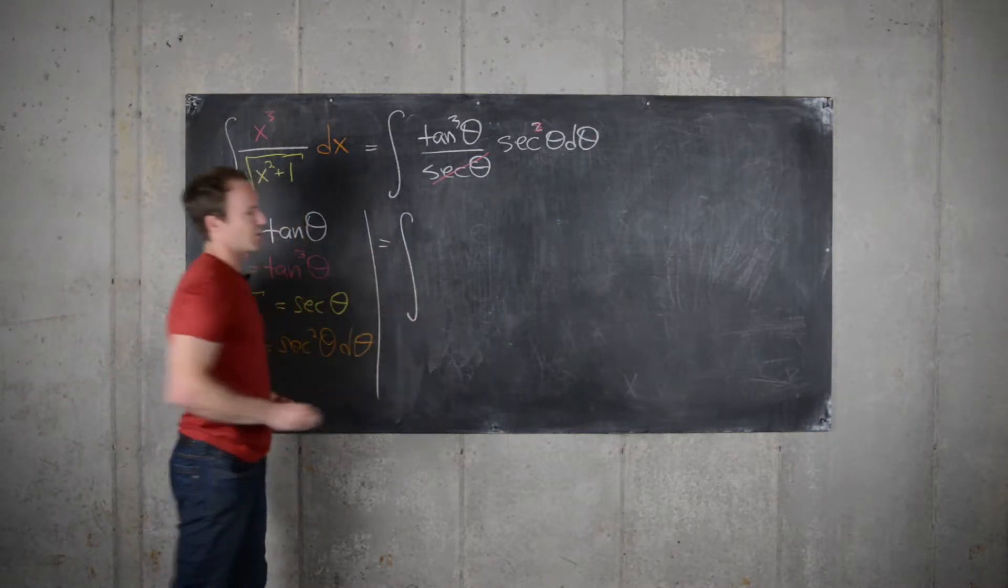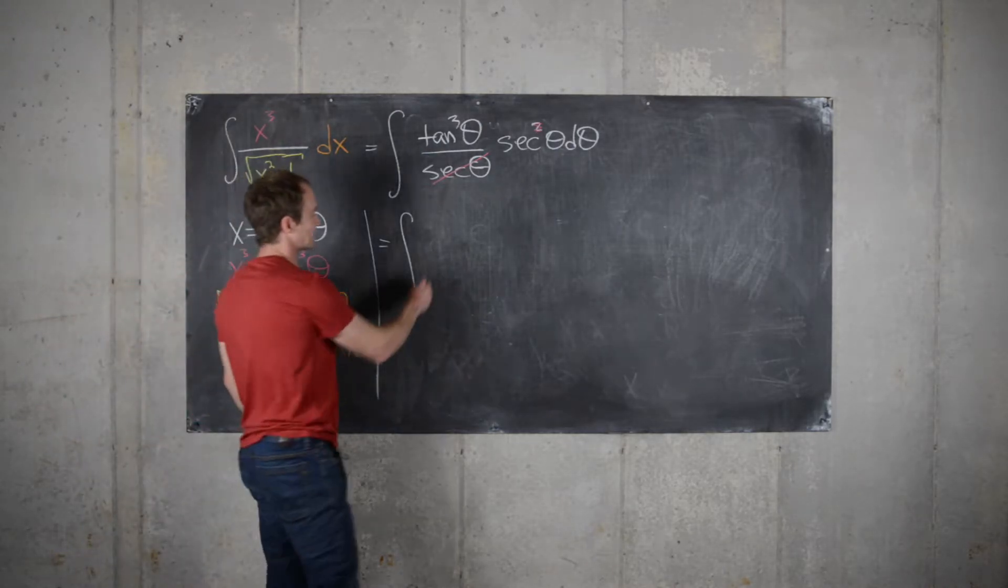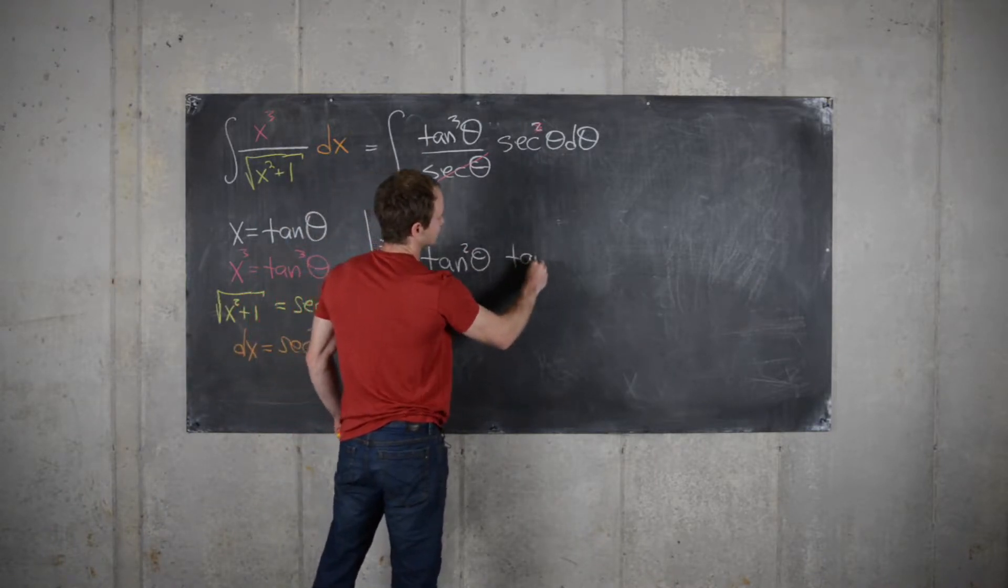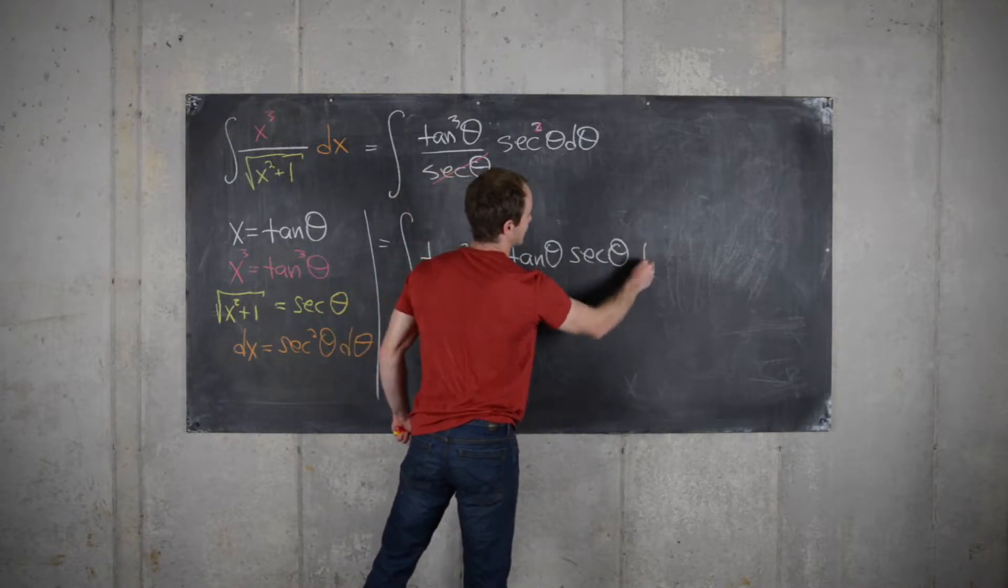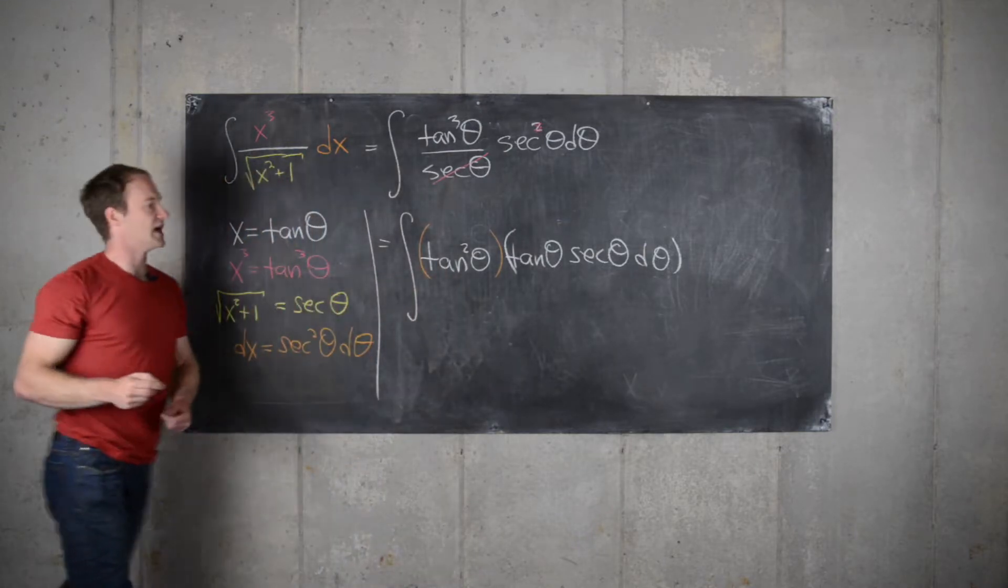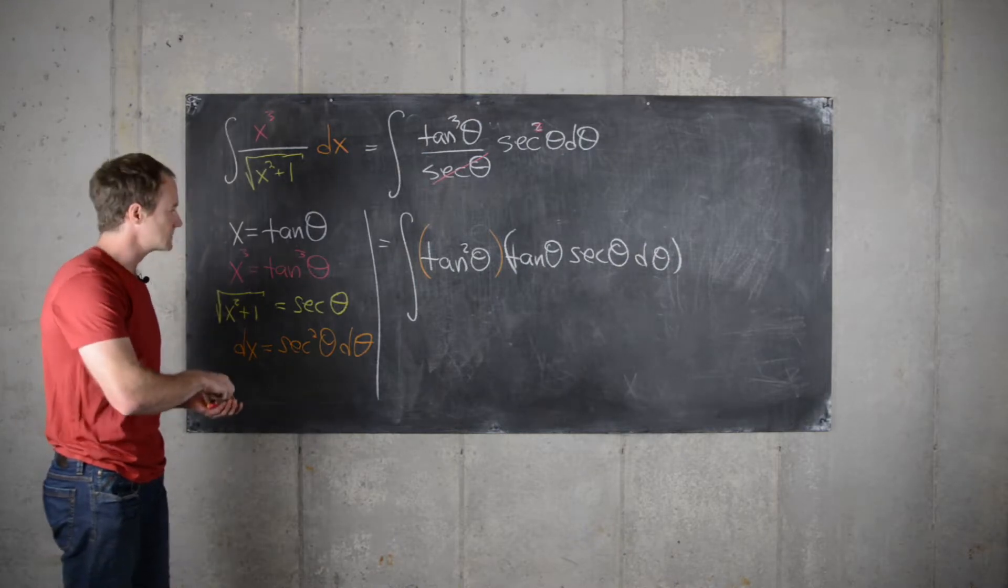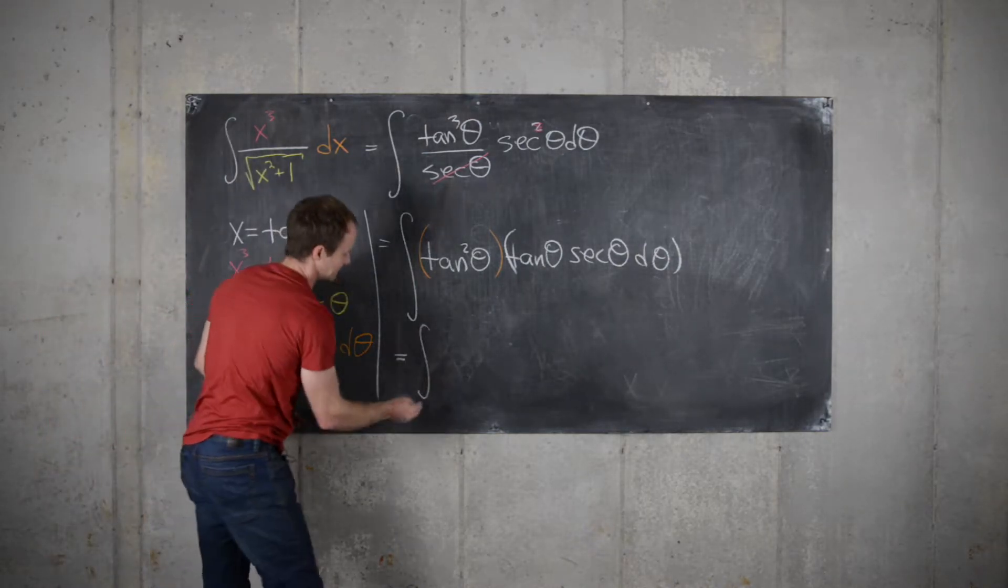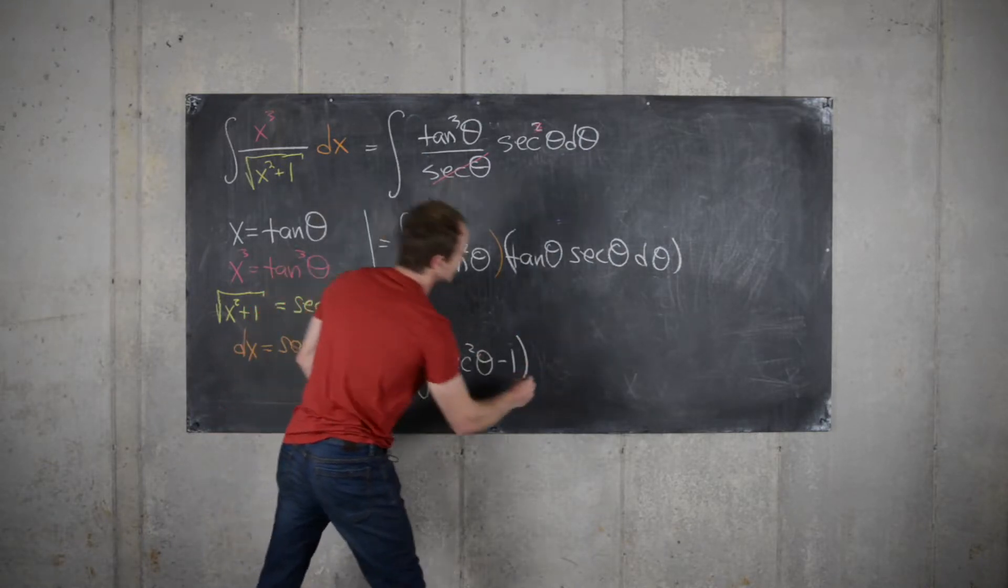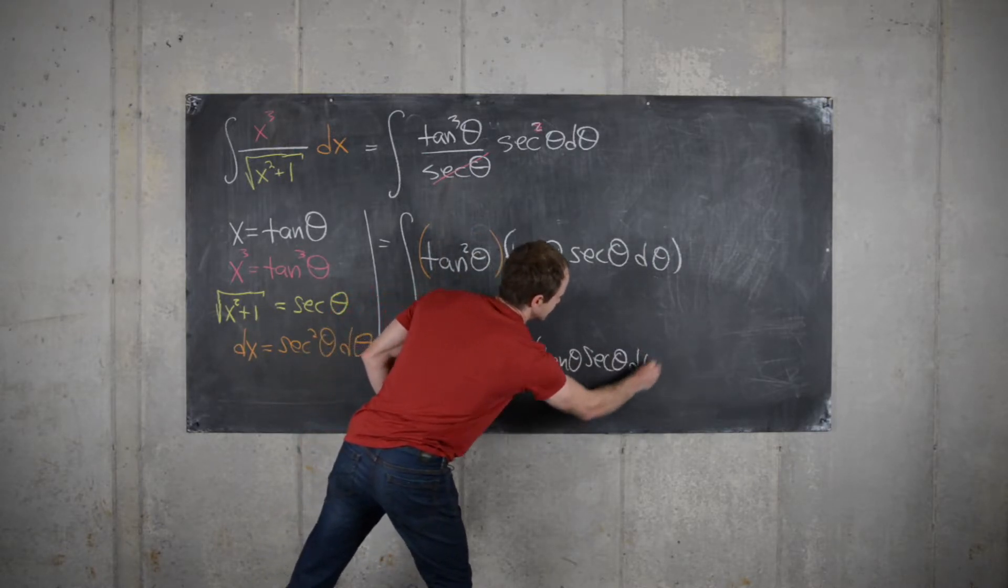So if you remember back to some methods for doing just trigonometric integrals, you'll notice that the best way to split this up is as tangent squared theta tangent theta times secant theta d theta. So we'll split it into these pieces, and then we can rewrite tangent theta using a trig identity. So this will be written as secant squared theta minus 1 times tangent theta secant theta d theta.